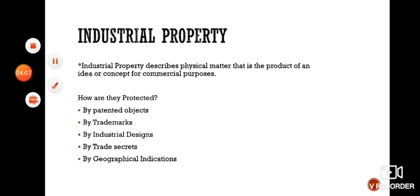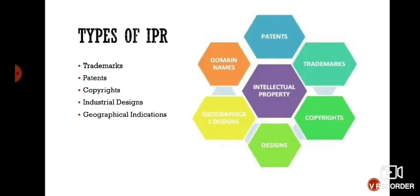Industrial property describes physical matter that is the product of an idea or concept for a commercial purpose. Industrial properties are protected through patents, trademarks, industrial designs, trade secrets, geographical indications, and more.